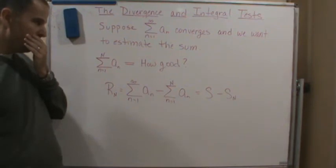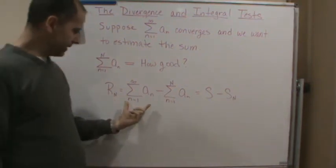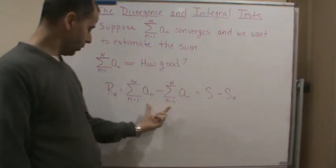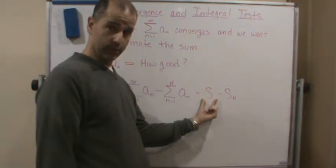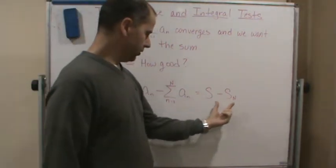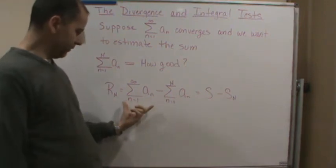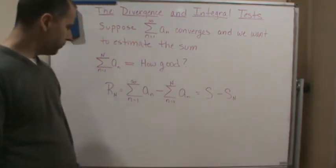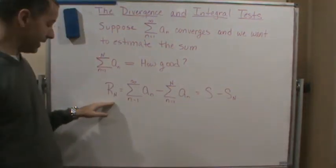Or better yet, if we define R sub capital N as the difference between these two series, these two sums. So this is the infinite series - that's our sum, our actual sum. And then this is our partial sum from one to capital N. So this difference, by taking the infinite series and subtracting off the first N terms, that gives us what's left over. And so we define that as the remainder.